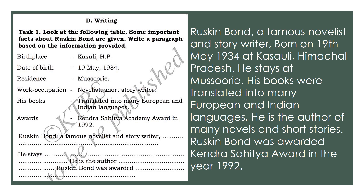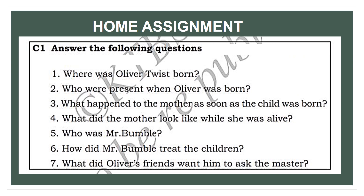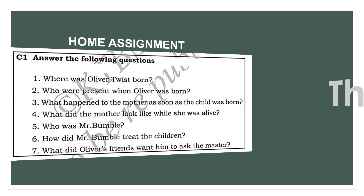Dear children, I hope you have understood all the aspects of this chapter, including the grammar — framing questions — as well as profile writing. Now let's move on to your home assignment. The questions are: 1. Where was Oliver Twist born? 2. Who were present when Oliver was born? 3. What happened to the mother as soon as the child was born? 4. What did the mother look like while she was alive? 5. Who was Mr. Bumble? 6. How did Mr. Bumble treat the children? 7. What did Oliver's friends want him to do? Go through the video, understand the lesson, and do your homework. Thank you, dear children.